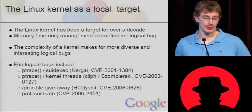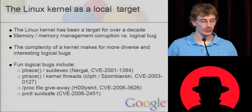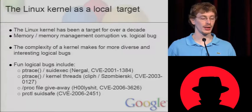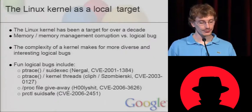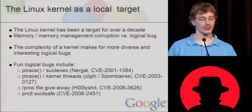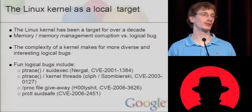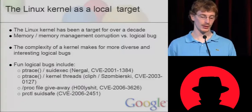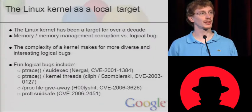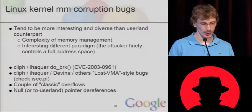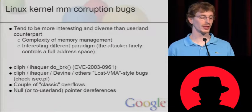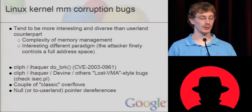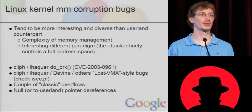The Linux kernel has been a local target for over a decade. We've seen many different kinds of bugs: memory and memory management corruption bugs versus logic bugs. The complexity of the kernel makes for more diverse and interesting logic bugs than in userland. We've listed a few logic bugs that we really liked — the first one is a really good example of things going wrong. We've also seen memory management corruption bugs, which also tend to be more interesting and diverse than their userland counterparts, where it's almost always the same.